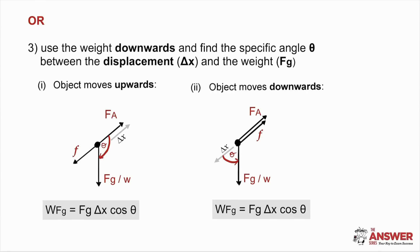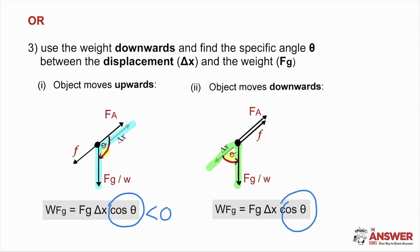Finally, we can look at the angle between the gravitational force and delta x itself on the inclined plane. If the object is moving upwards — delta x going up the slope and the gravitational force pointing downwards — then the angle between the two vectors is greater than 90 degrees. The cosine of an angle greater than 90 degrees is negative, so the gravitational force does negative work. If the object is moving downwards, then delta x and the gravitational force are in similar directions — the angle between the two is less than 90 degrees. The cosine of an angle less than 90 degrees is positive, and so the work done by the gravitational force is positive.